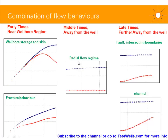At middle times, you will see radial flow regime — hopefully one stabilization in the derivative, though in some cases you might expect more than one stabilization. At late time, you will probably see boundaries. There are two types: either an increase in the derivative followed by a stabilization — which, depending on the level, indicates a fault or intersecting boundaries — or an increase in the derivative following a half unit slope straight line, representing linear flow regime, which is indicative of a channel.